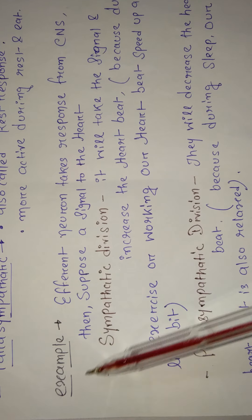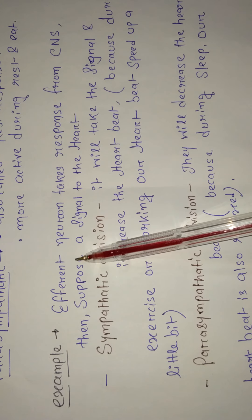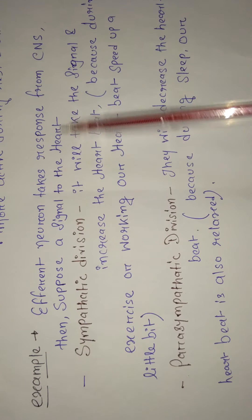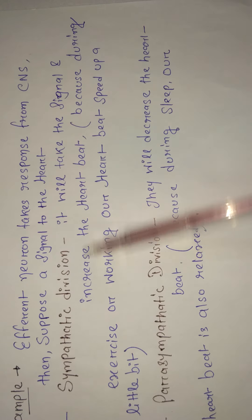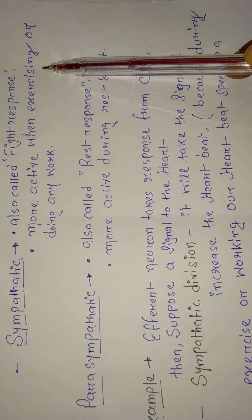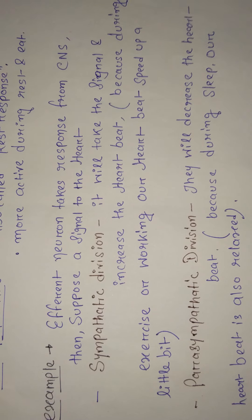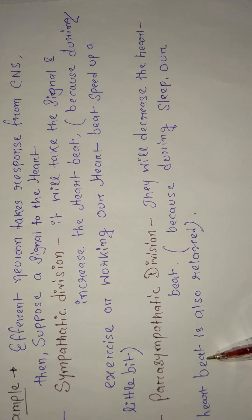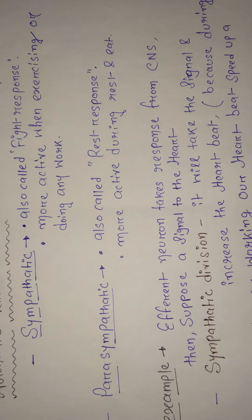For example, suppose a signal needs to be sent to the heart. The afferent neuron takes the response from the CNS to our heart. The sympathetic division will increase the heartbeat — it is a fight response, active during exercise, so our heartbeat increases. The parasympathetic division will decrease our heartbeat, getting more active during sleep when the heartbeat becomes relaxed.